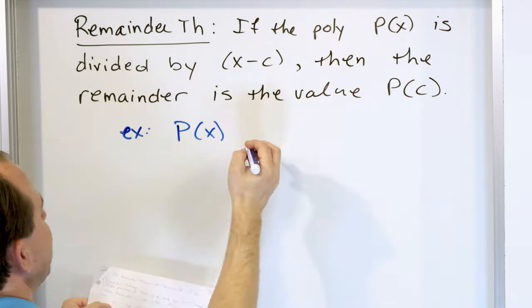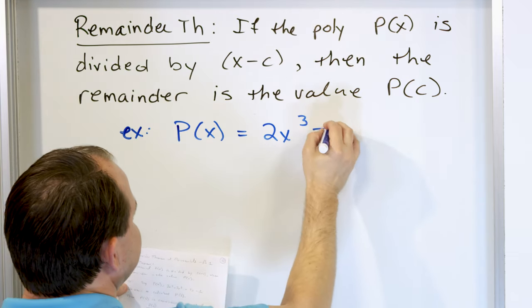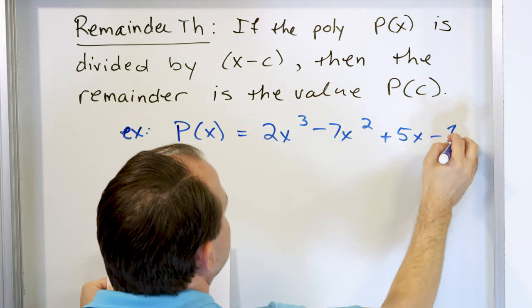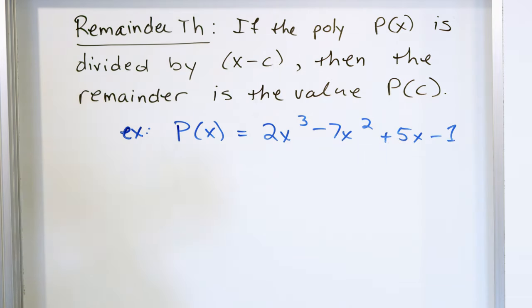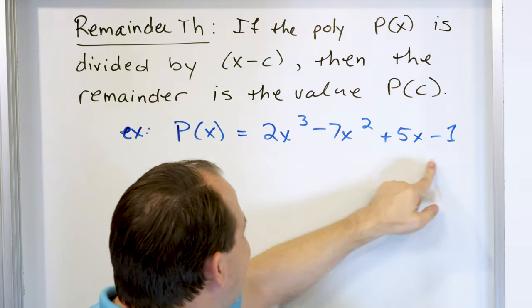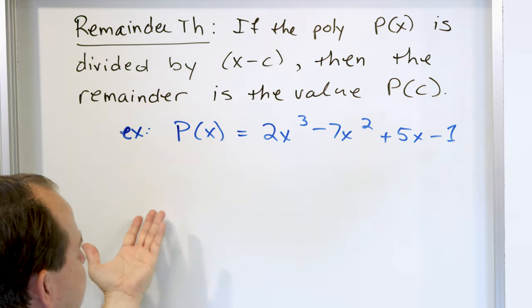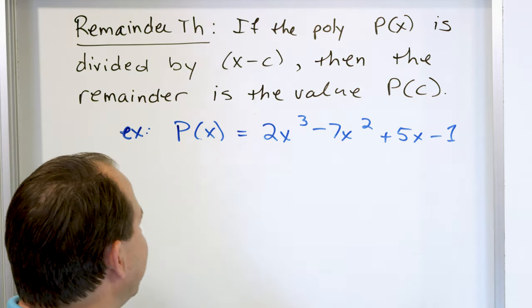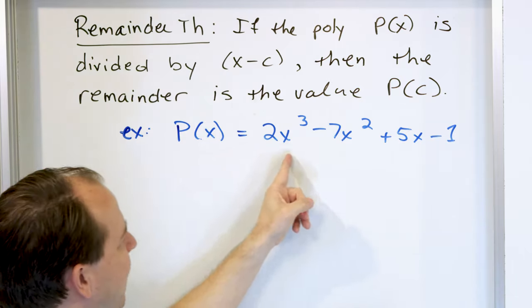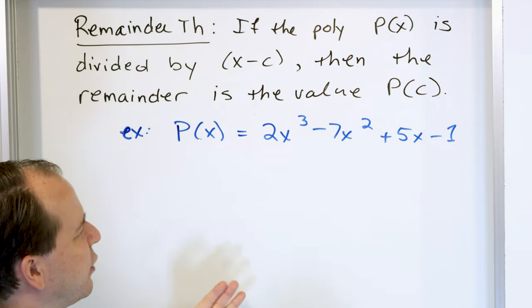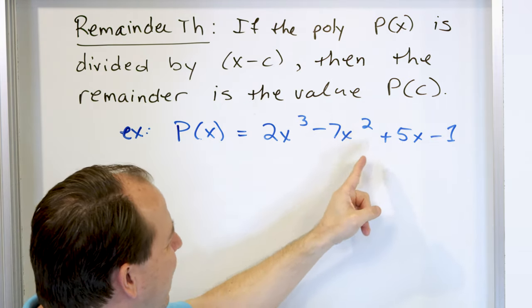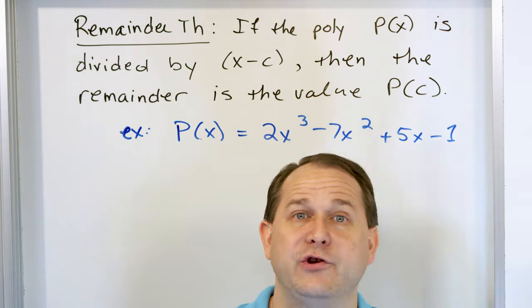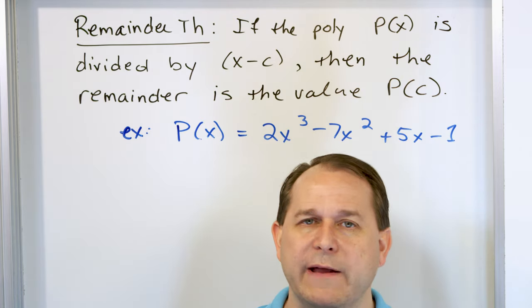It can be any polynomial you want, but I'm going to pick: 2x cubed minus 7x squared plus 5x minus 1. You all know that I can put numbers into this polynomial and calculate the answers — that's what we've been doing. So I can put the number 1 in here and calculate the value, or the number 17. But you have to agree that because of the cubed and squared terms, it can be a little cumbersome to evaluate the polynomial by sticking a number in.